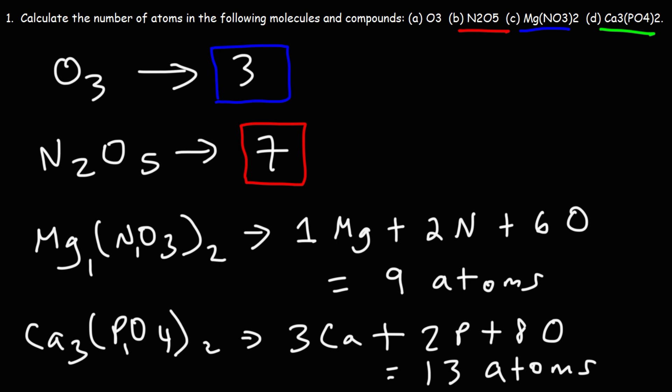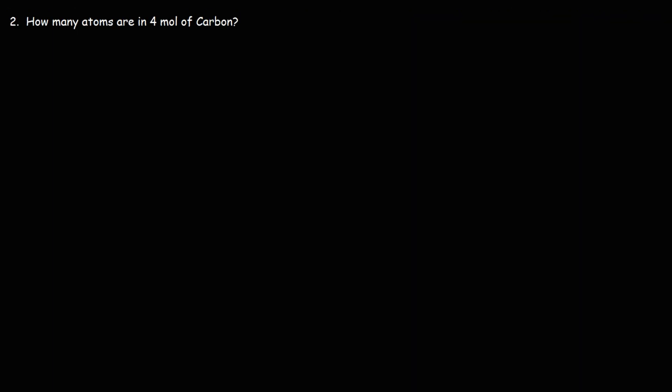So that's how you can determine the number of atoms or ions in a compound. Now let's move on to number 2: how many atoms are in 4 moles of carbon? In other words, how can we convert from moles to atoms?